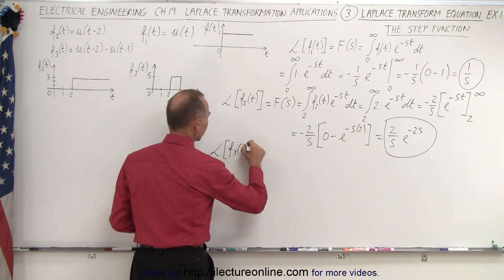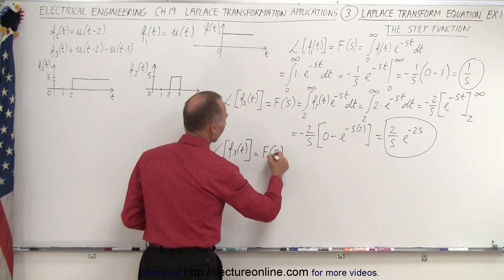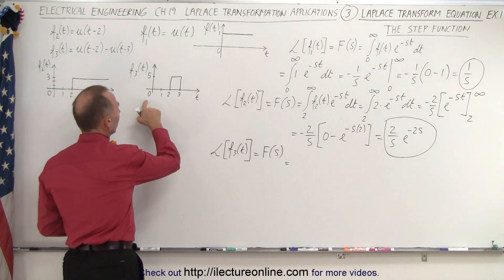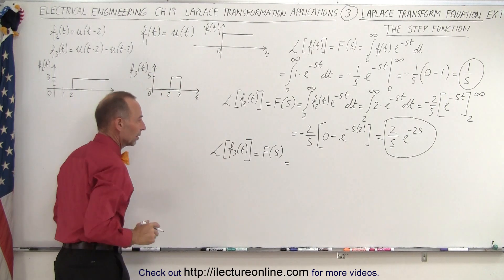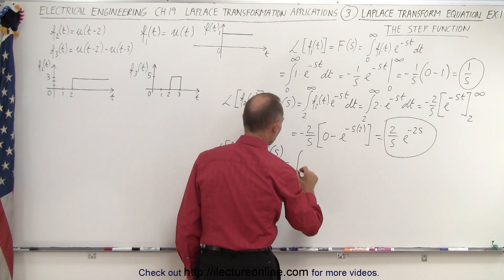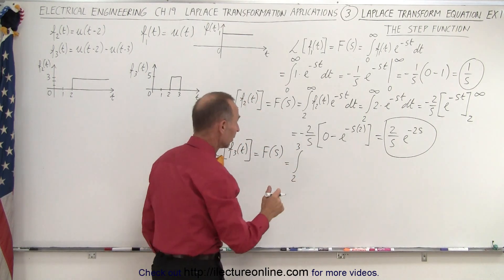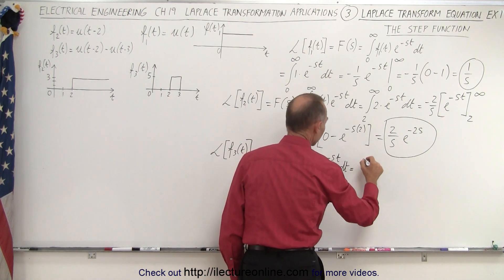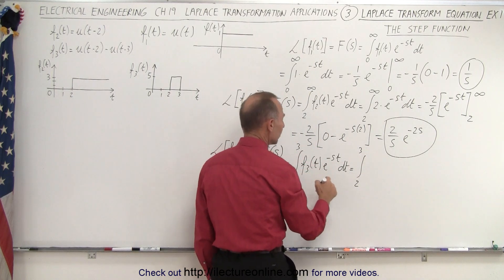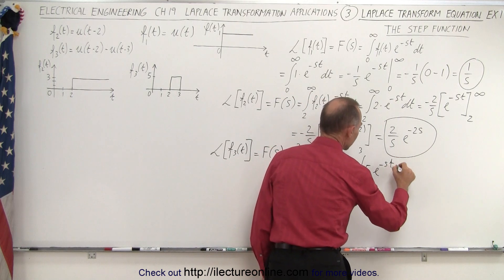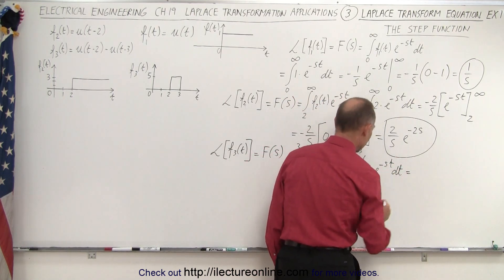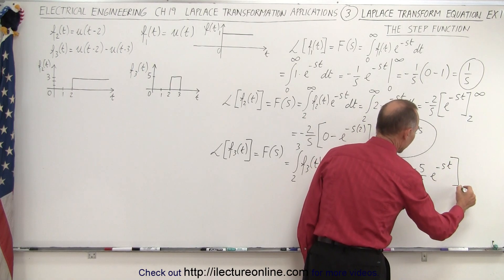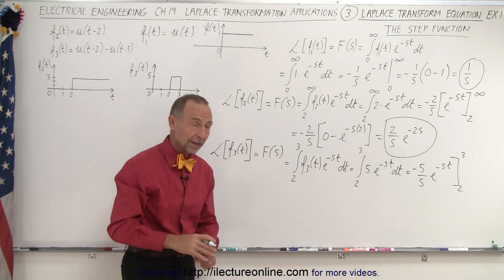Now let's find the Laplace transform of our third function. The magnitude is five between t equals two and t equals three, and everywhere else the function is zero, so we integrate from two to three. This equals the integral from two to three of f₃(t) times e to the minus st dt, where f₃(t) equals five, so five times e to the minus st dt. This equals negative five over s times e to the minus st, evaluated from two to three.